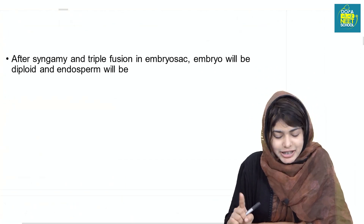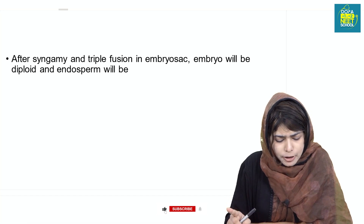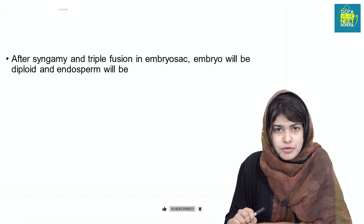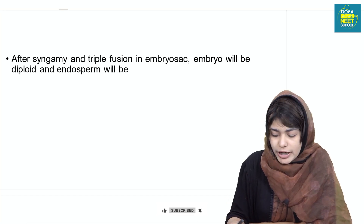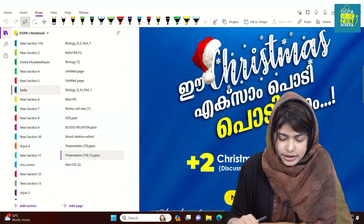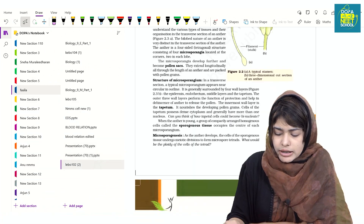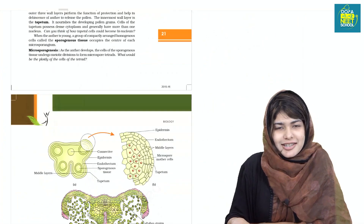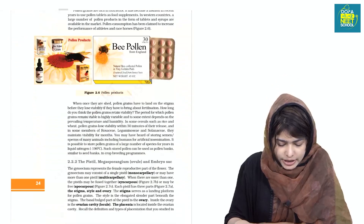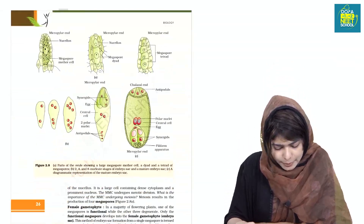Endosperm will be triploid. This is a triple fusion, and that is double fertilization.